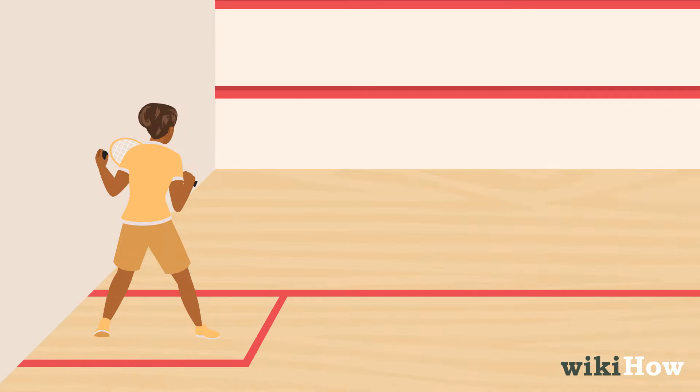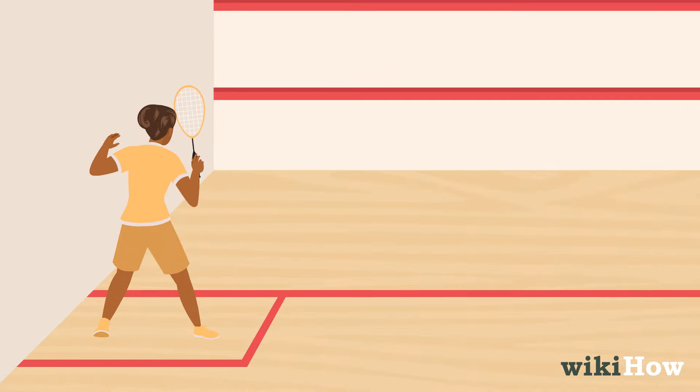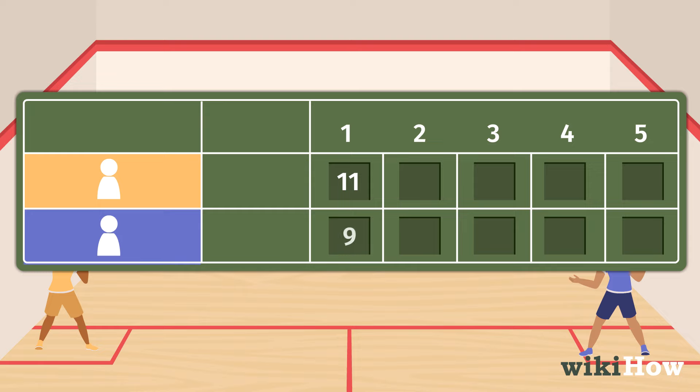The player that earns the point serves the ball to continue the game. Whoever makes it to 11 points first wins the first game. To win the squash match, you must win the best of three or the best of five games.